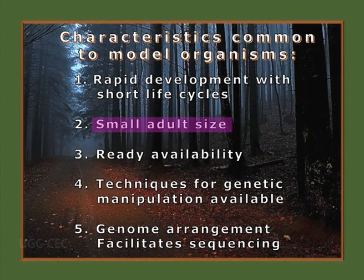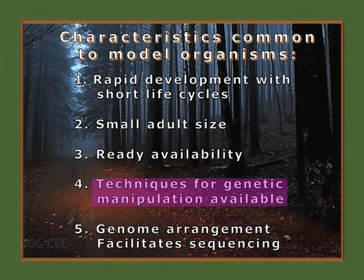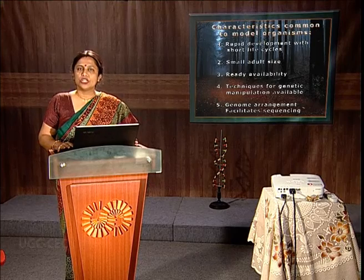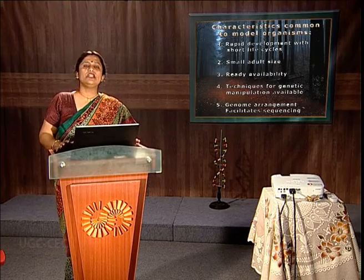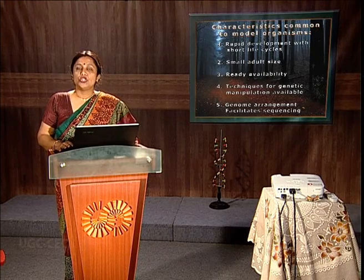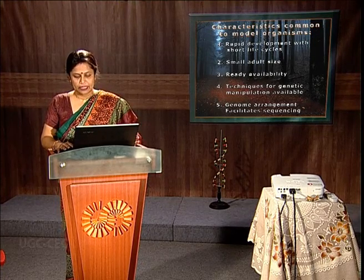Second, their adult size should be small and they should be readily available, and we should have sufficient techniques to manipulate them — only then can we get hold of any information. Finally, the genome arrangement should be such that sequencing is easier, because if there is too much junk DNA in their genomes it becomes difficult to carry on the sequencing. The bottom line is that all information we get from model organisms ultimately comes down to DNA.